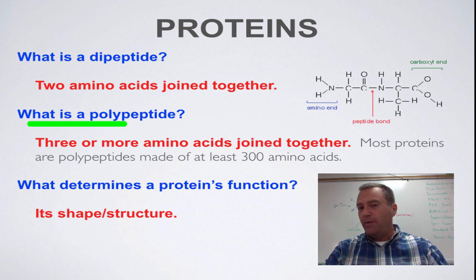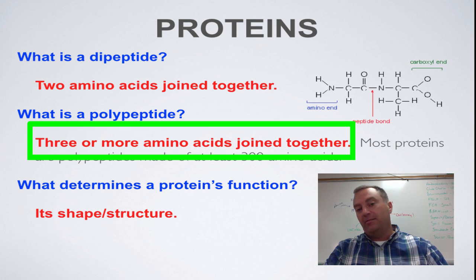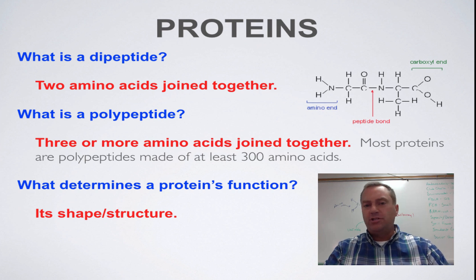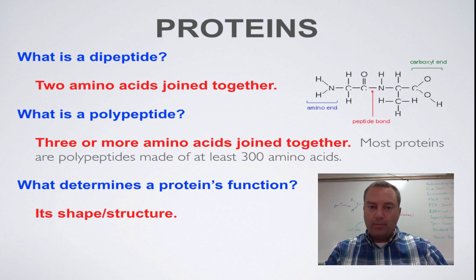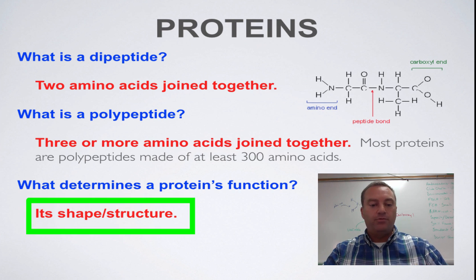So if you want to make a polypeptide, you just take your dipeptide and add another amino acid to it. You can add an amino acid to the carboxyl end, or you could add one to the amino end on the other side. Proteins in general are very, very long — the average protein in your body is a chain of 300 amino acids. So proteins are very long, very complicated, and they have a 3D structure. The number one thing that determines the function of a protein is going to be its shape and its structure.